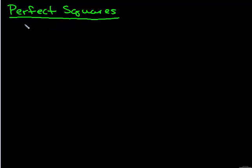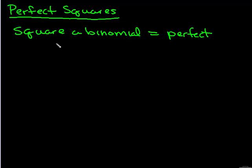Our first special product is called perfect squares. When we multiply or square a binomial, you get what's called a perfect square trinomial. And this follows a very specific pattern.